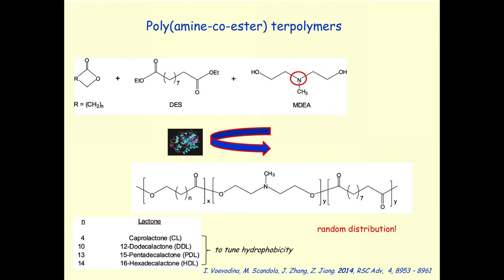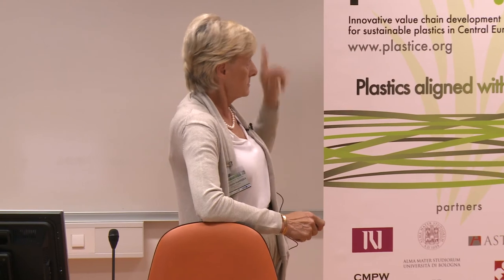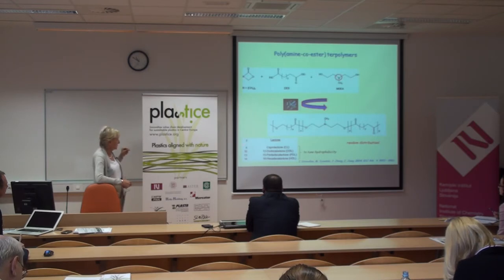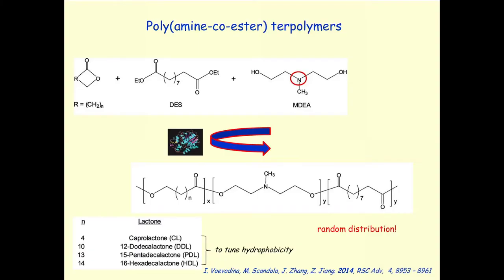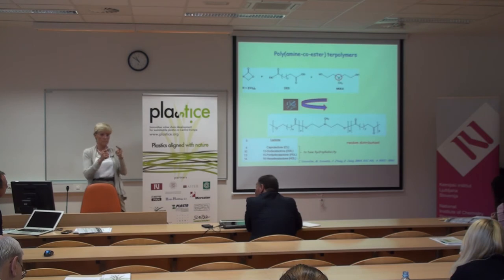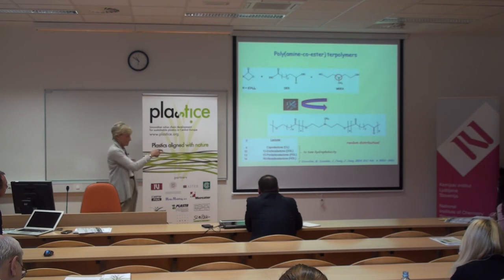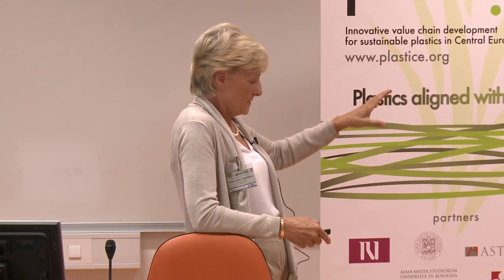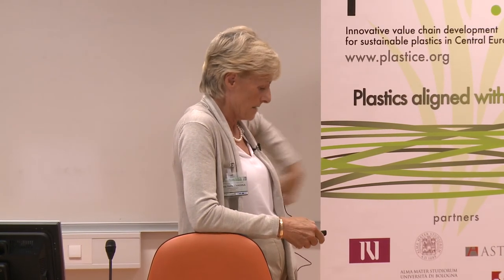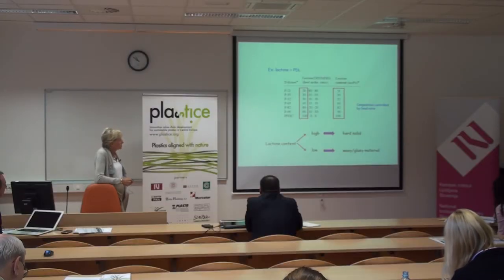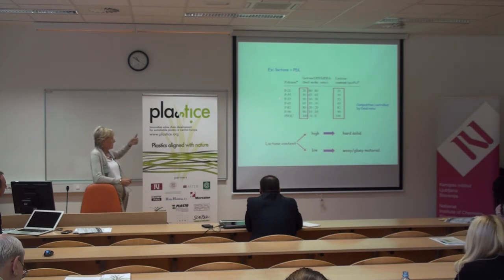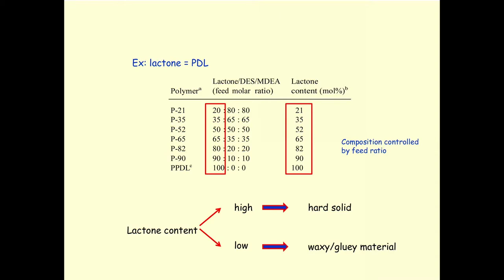We analyzed several types of such polymers. One example uses a glycol containing a tertiary amine, terpolymerized with a diacid and a lactone of varying size — from caprolactone (small) to hexadecalactone (large) — to tune hydrophobicity by introducing long or short methylene stretches. Using enzyme catalysis, the distribution is again random. The feed composition is very well reflected in the final polymer composition, enabling easy control.